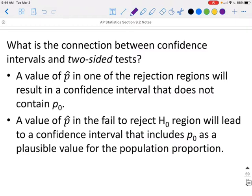So what is the connection between confidence interval and two-sided test? This is only true about two-sided tests. A value of P hat in one of the rejection regions will result in a confidence interval that does not contain P sub 0.